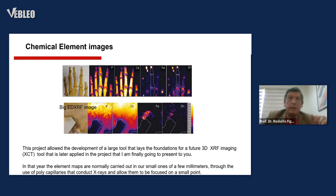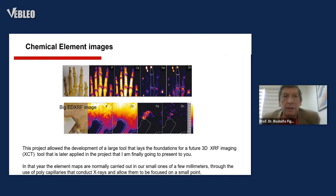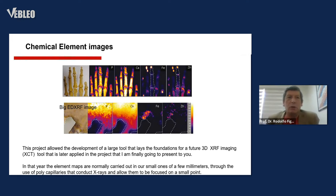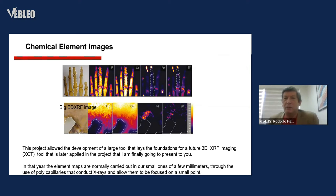Another example: you have a ham — a large image of X-ray fluorescence. You can see potassium, calcium, iron, zinc, and a full X-ray fluorescence image. This project allowed the development of a tool that serves as the foundation of the future 3D X-ray imaging XCT tool, later applied in the project I am going to present. The element maps are normally carried out on a small area of a few millimeters using polycapillary optics that conduct X-rays and allow them to be focused on small points.